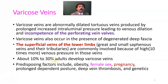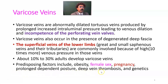About 10% to 30% of adults develop varicose veins. We have multiple predisposing factors like obesity, female sex, pregnancy, prolonged dependent posture like a teller in a bank or a surgeon working on blood vessels standing for a long time, deep vein thrombosis, and genetics — it may be autosomal recessive, autosomal dominant, or multifactorial. It may also be associated with deep vein thrombosis.